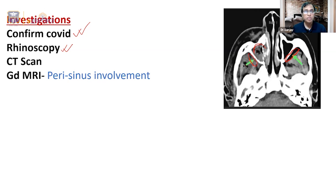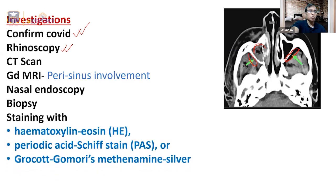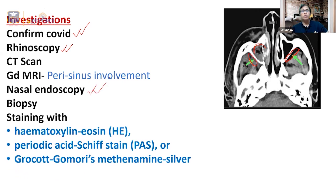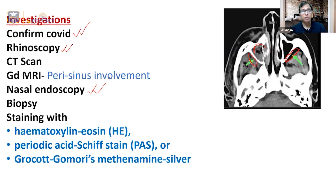Nasal endoscopy visualizes the deeper tissues — the superior turbinate, posterior layers, and nasopharynx. Anterior rhinoscopy only shows the inferior and middle turbinates. For deep examination, endoscopy is essential. Diagnosis is confirmed by biopsy and staining. CT scan with gadolinium-enhanced MRI and endoscopy-guided biopsy together form the diagnostic triad. Dr. Neha will now discuss the staining details.